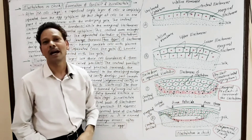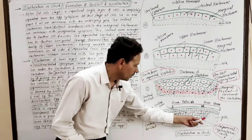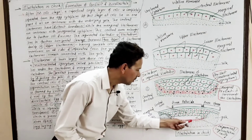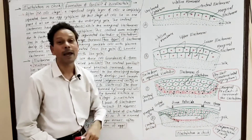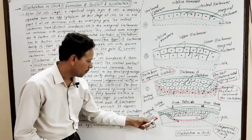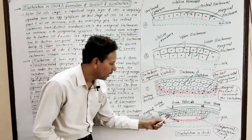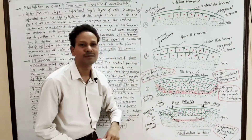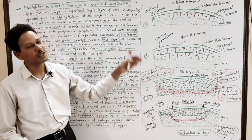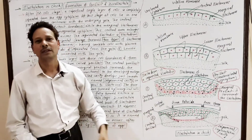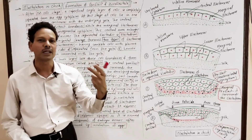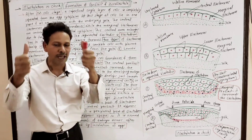This sub-germinal or segmentation cavity, which is homologous to the blastocoel, lies between the blastoderm and periblast. Its floor is formed by the periblast, its sides are formed by the marginal cells, and its roof is formed by the cells of the blastoderm. This is all about disco blastulation — the process of formation of blastoderm in the case of chick.